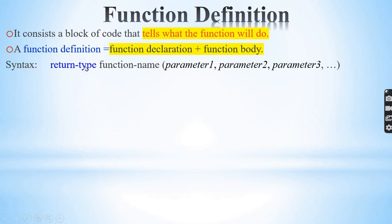The syntax: return type, function name, parameter one, parameter two, parameter three. Function declaration has a semicolon, but function definition has no semicolon. Instead it has the function body.